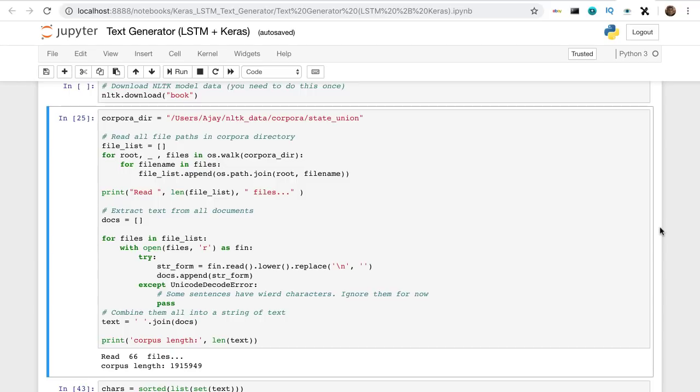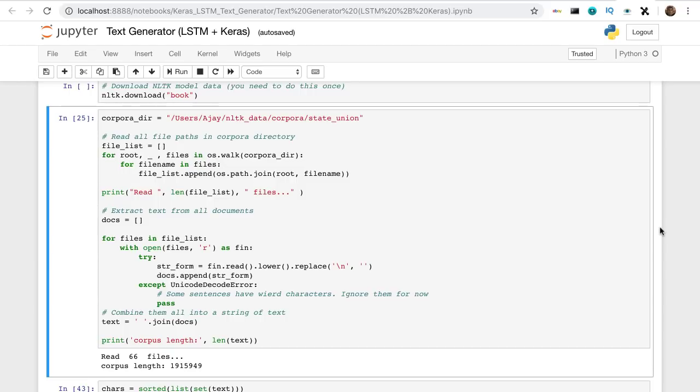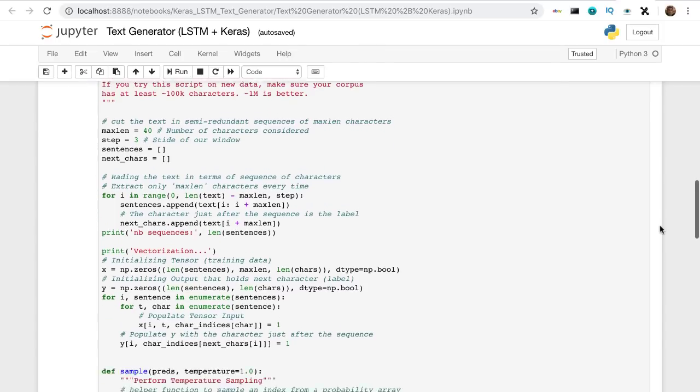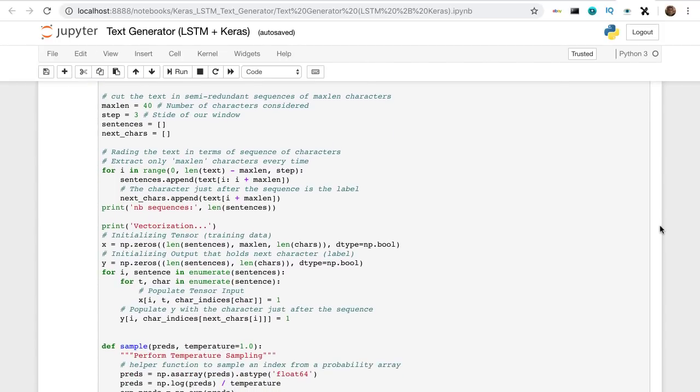This first chunk of code here reads all the files in the directory of our corpus into a single string. Next, we construct a mapping from every character to a number, and also its inverse mapping.